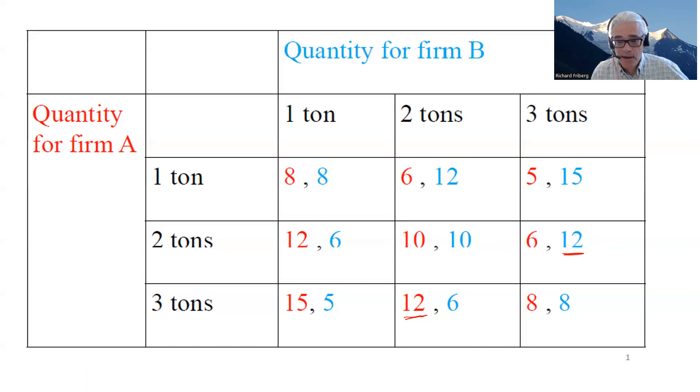And similarly, we can walk through the game here. So start with firm A. If it believes that B would be producing one ton, well, A compares payoffs 8, 12, and 15. 15 is highest. If A believes that B will be producing three tons, it compares 5, 6, and 8, 8 being the highest.